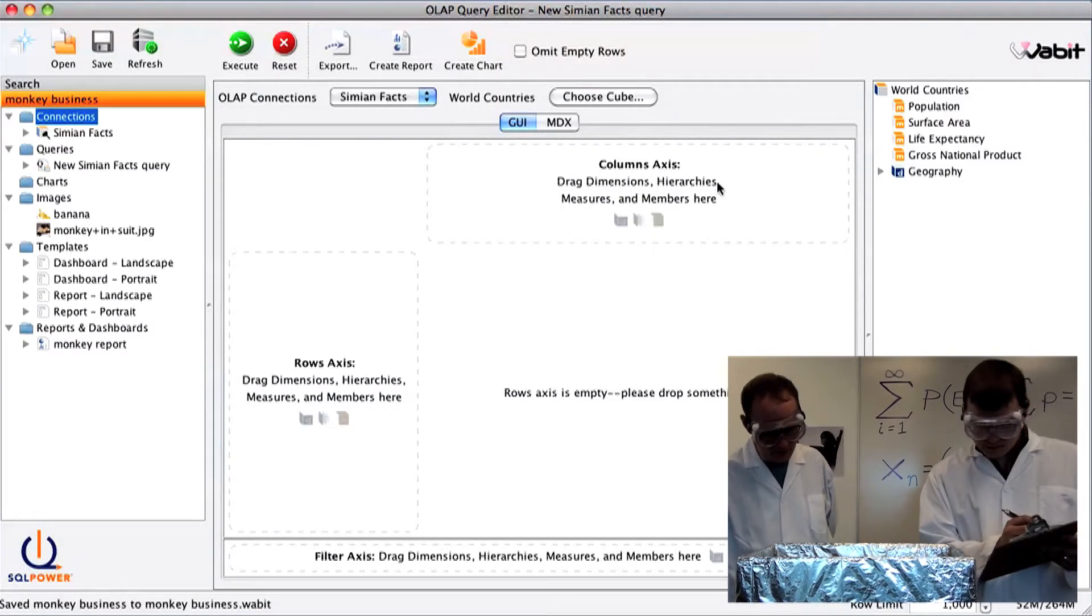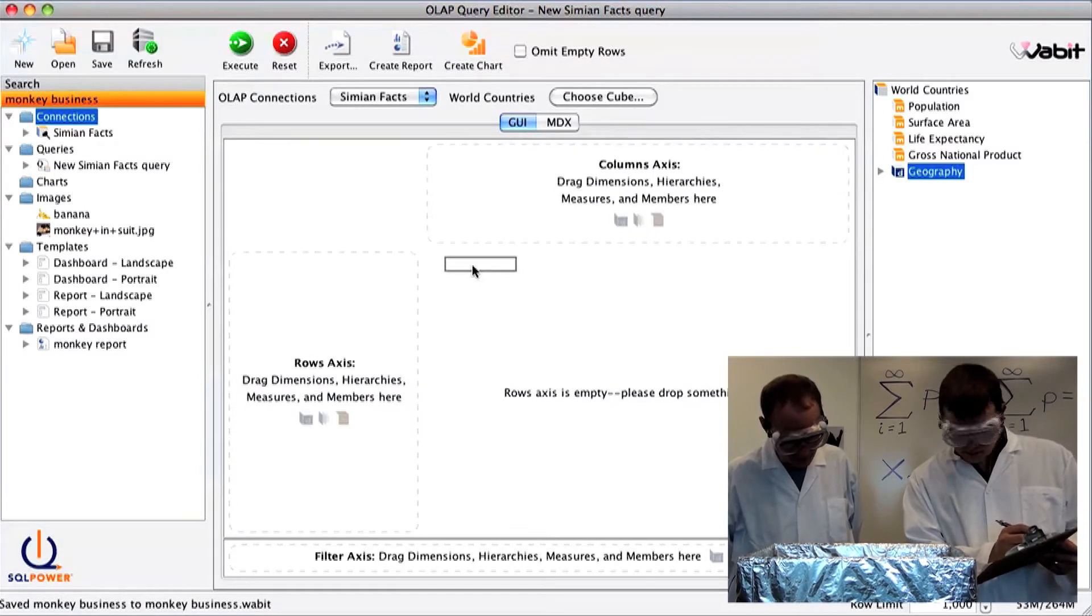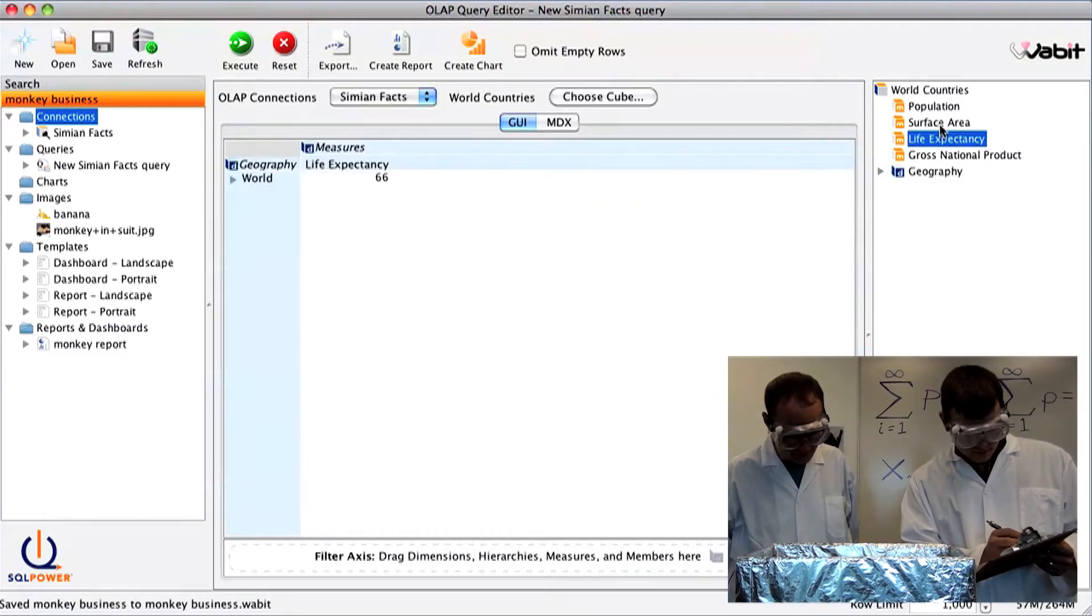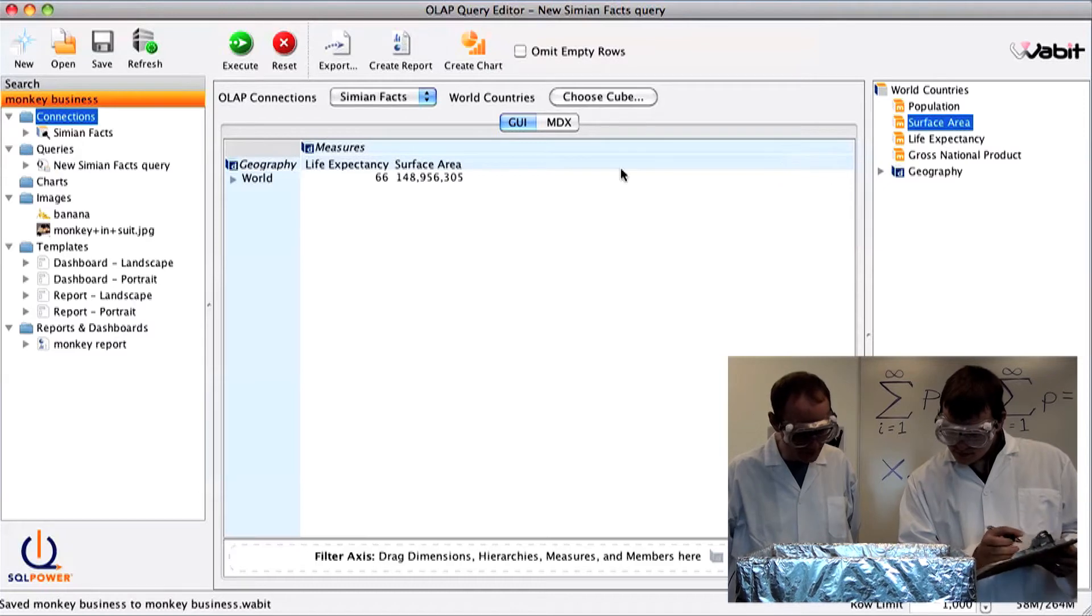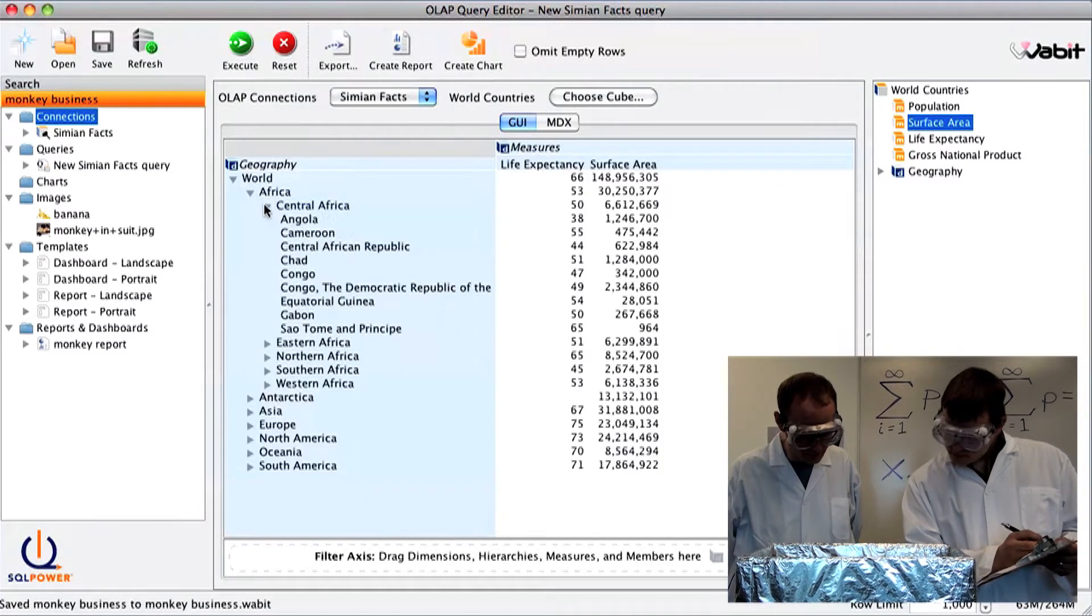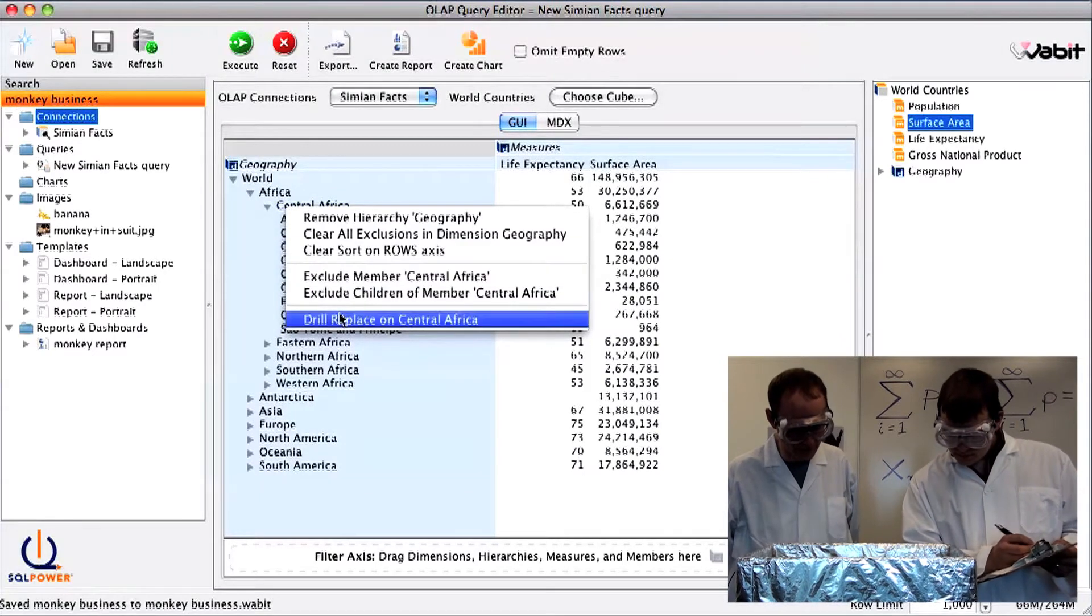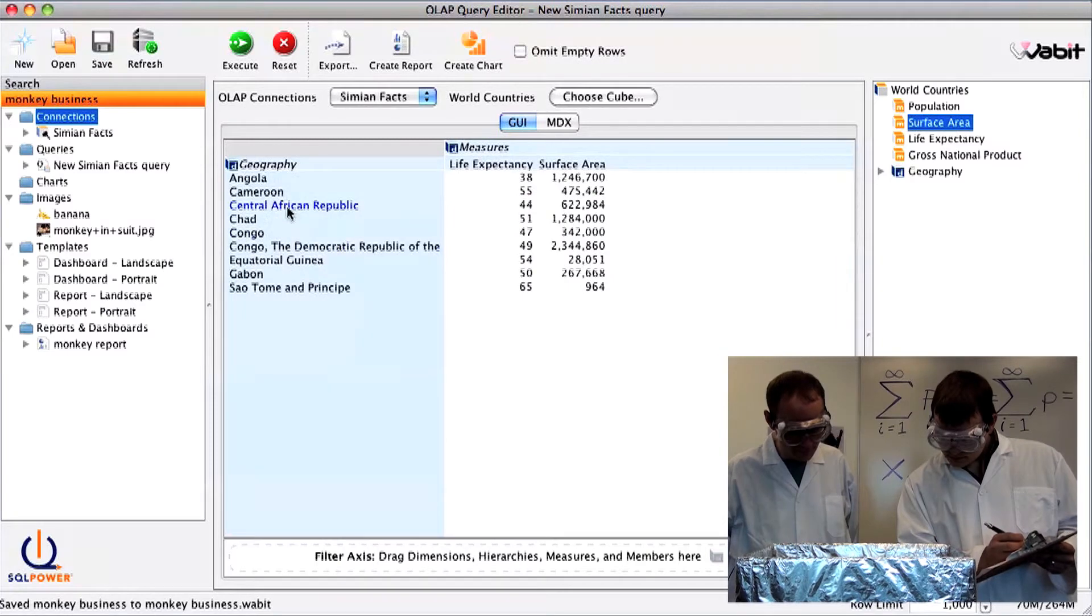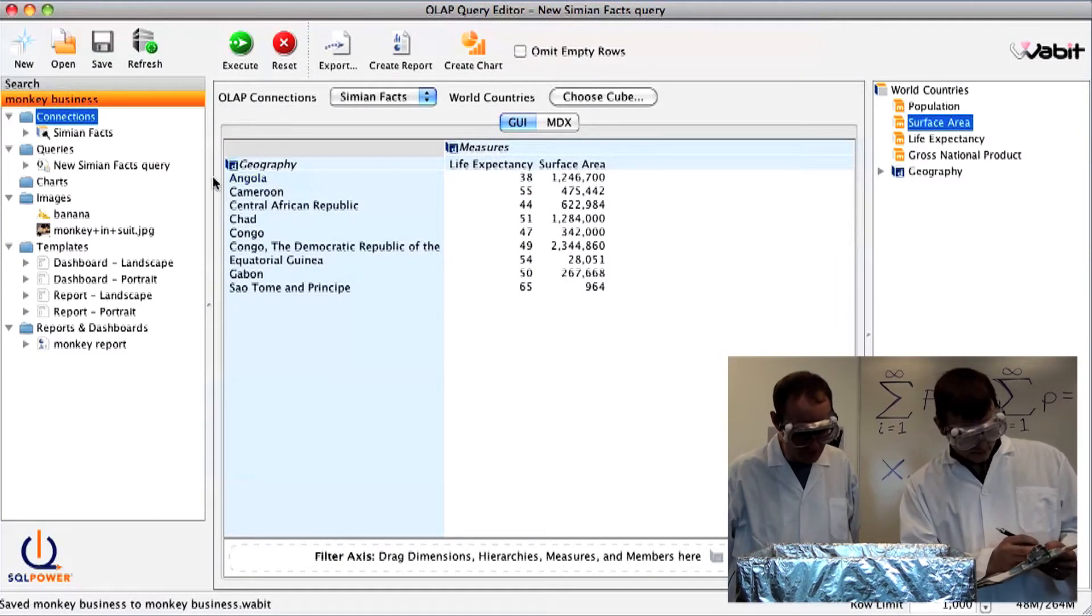Okay, oh, now they're back to work. And they've selected the geography dimension. Life expectancy, surface area. They're drilling down on the world into Central Africa. That makes sense. And yeah, just focusing on Central Africa.